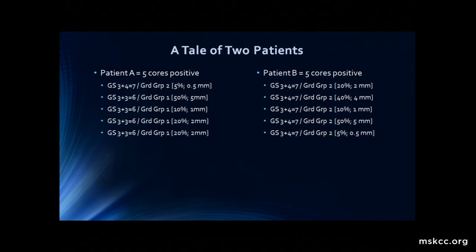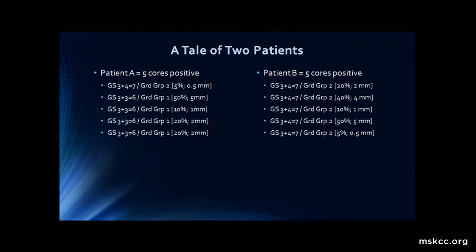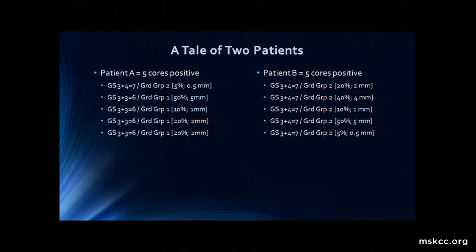I take you to this tale of two patients. Both patients have five cores positive. We can quickly see that one has grade group 2, a small percent of cancer, with the rest being multifocal low-grade disease. Patient B also has grade group 2 but more significant disease. However, if you summarize these patients, they're both grade group 2, five cores positive, with a greatest percent core involvement of 50% — if that's all you extract from the report.